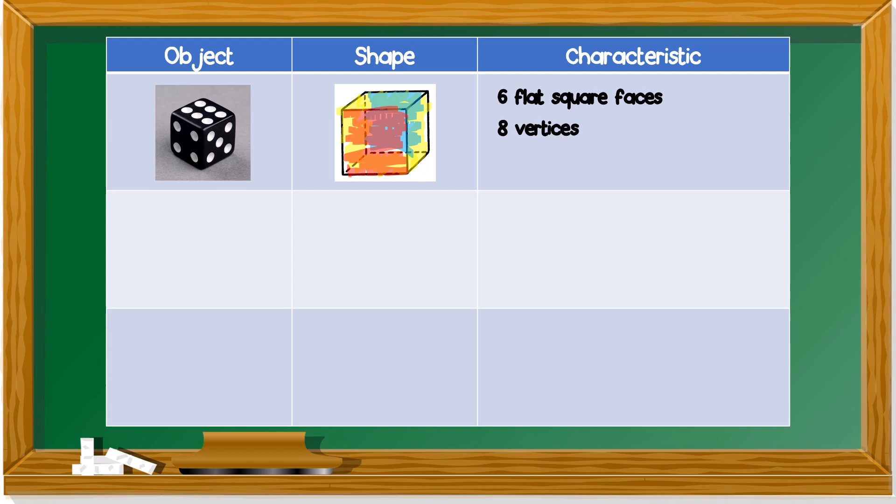It has eight vertices. What is vertices? Vertices ialah bucunya. So the edges is called vertices. This is one vertice, two vertices, three, four, five, six, seven. One more, here inside, eight. Eight vertices.